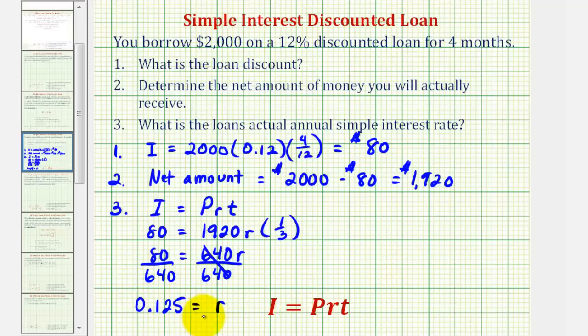This is the decimal value of the annual interest rate. Multiplying by 100 will convert this to a percentage. So the actual annual simple interest rate paid for this discounted loan is 12.5%. Okay, that's going to do it for this example, I hope you found this helpful.